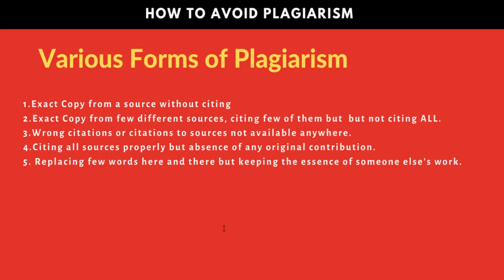Before I tell you how to avoid plagiarism, note that there is a chance it is a coincidence that one of your sentences matches someone else's — that is addressed in the third slide. First, let's look at the various forms of plagiarism. The first is the obvious one: an exact copy from a source without citing. The second is an exact copy from a few different sources, citing some of them but not all — you must cite all sources from which you copy anything in your manuscript. The third form is wrong citations, or citations to sources not available anywhere. You cannot put wrong citations to get credit for something. Always make sure your citations are correct — even mistakes are not allowed.